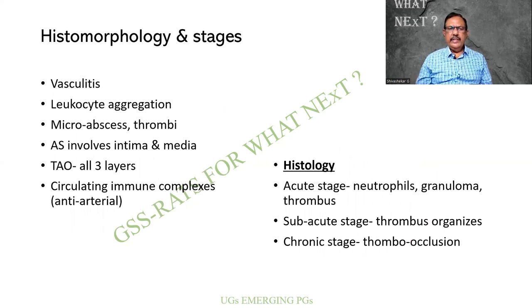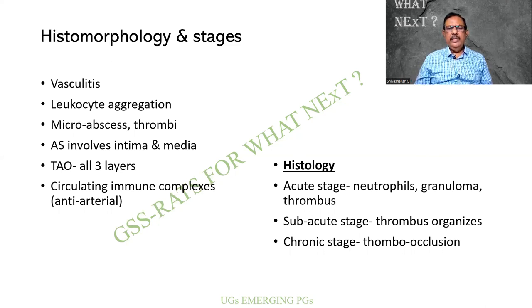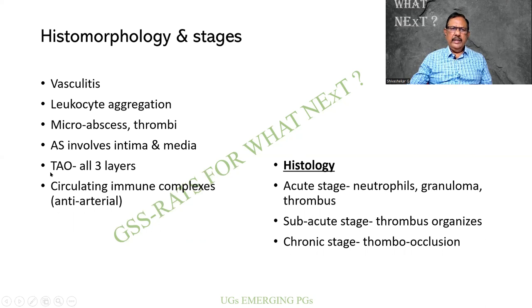What is the histomorphology and the stages? The first finding is vasculitis, meaning there will be inflammation and aggregation of leukocytes. Micro-abscess formation can be present, and sometimes the tissue is destroyed — we find only neutrophils and micro-abscesses. Thrombi are extremely important because they cause total occlusion. This must be differentiated from atherosclerosis, which involves only the intima and media, whereas in thromboangiitis obliterans all the layers are involved. This is due to HLA and circulating immune complexes — anti-arterial immune complexes.